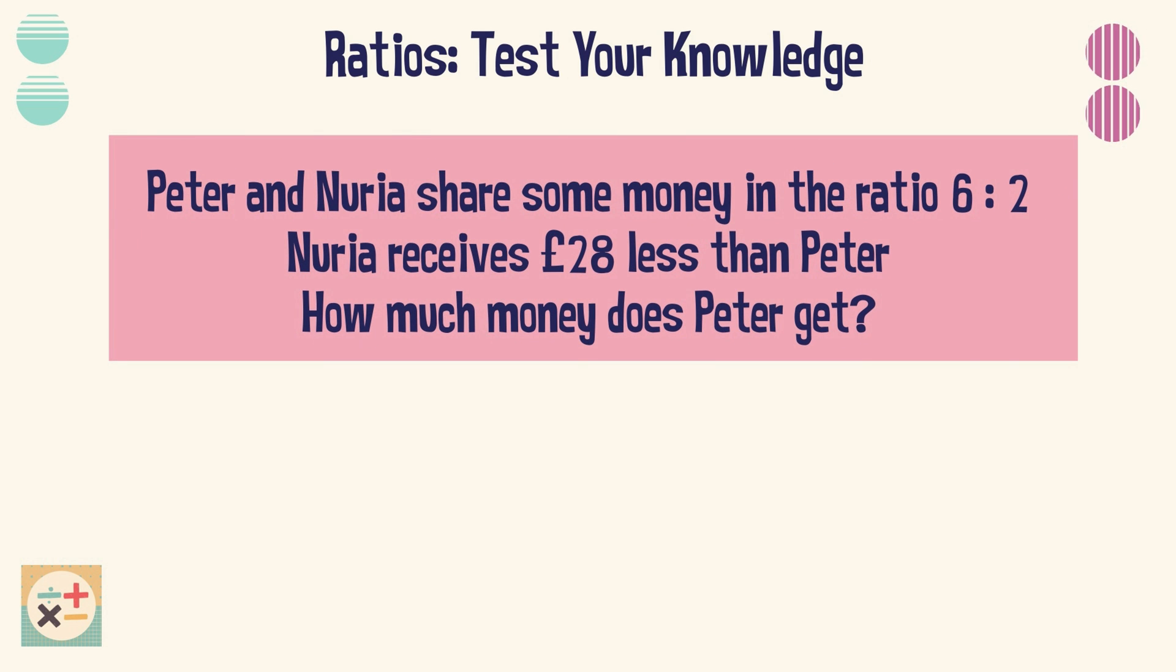Question 7. Peter and Nuria share some money in the ratio 6 to 2. How much money does Peter get?